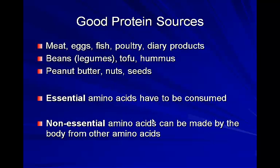Good protein sources: the ones that weren't great sources of carbohydrates tend to be the better protein sources. Meat, eggs, fish, poultry, and dairy products are great protein sources. Beans, tofu, and hummus are also good sources of protein. Peanut butter, nuts, and seeds all have a lot of protein. Remember: essential amino acids must be consumed, while non-essential amino acids can be made by the body from other amino acids.